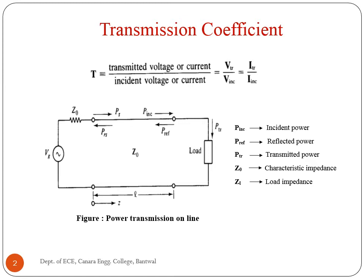Transmission coefficient is the ratio of the transmitted voltage to the incident voltage. A transmission coefficient describes the amplitude, intensity, or total power of a transmitted wave relative to an incident wave.